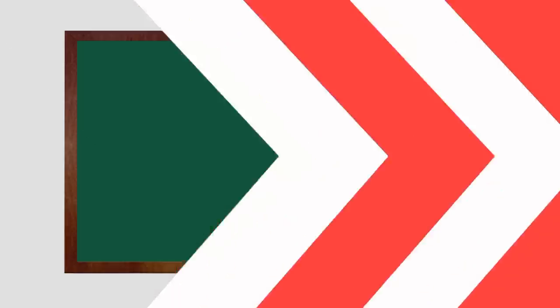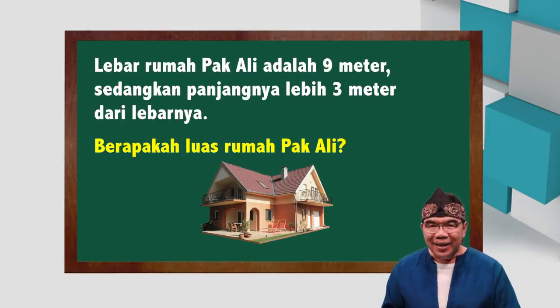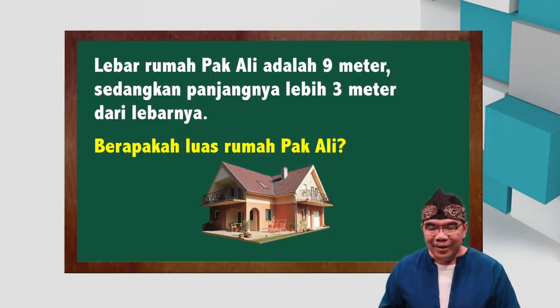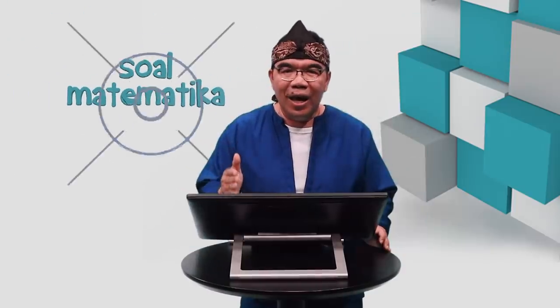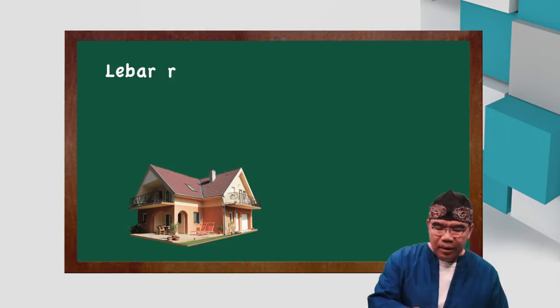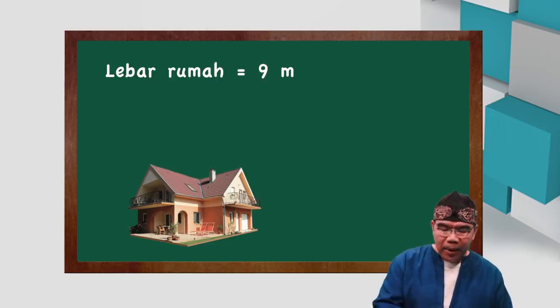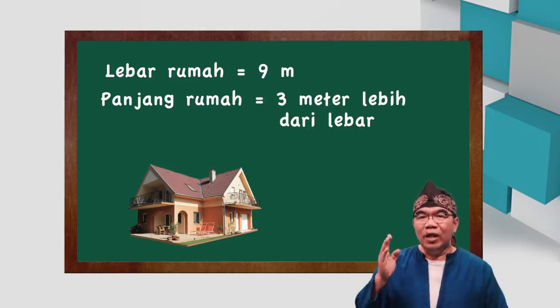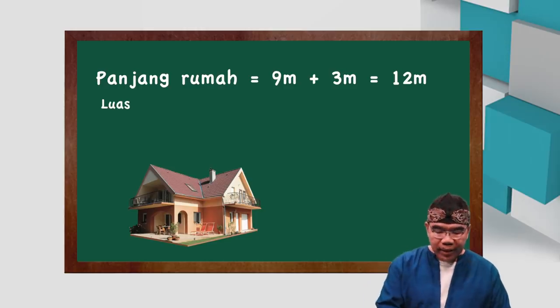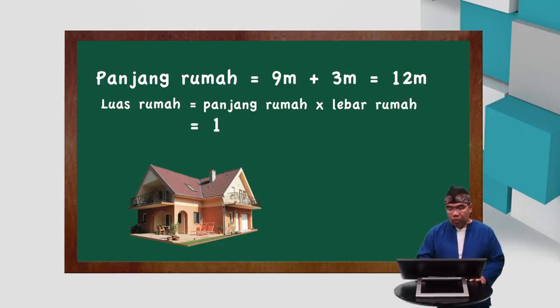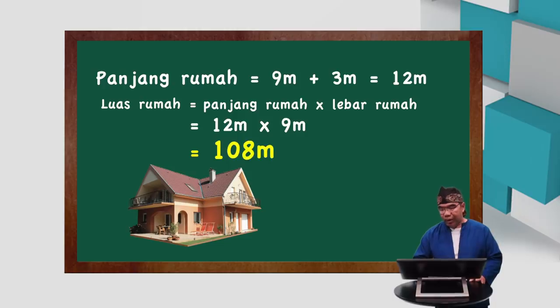Lebar rumah Pak Ali adalah 9 meter, sedangkan panjangnya lebih 3 meter dari lebarnya. Berapakah luas rumah Pak Ali? Ini soal masuk kategori HOTS atau Higher Order Thinking Skills, soal bertaraf tinggi. Tidak perlu khawatir, dengan Pariduan soal matematika menjadi mudah. Perhatikan caranya: lebar sama dengan 9 meter. Panjang lebih 3 meter dari lebar, berarti 9 ditambah 3 sama dengan 12 meter. Berarti luas sama dengan panjang kali lebar, atau 12 dikali 9, sama dengan 108 meter persegi.